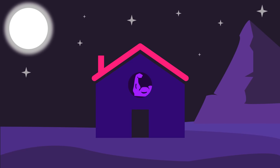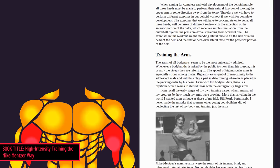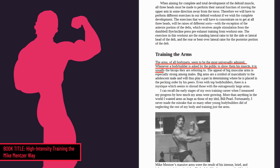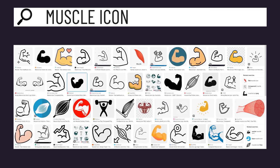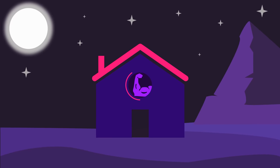Welcome to the House of Hypertrophy. As described by Mike Mensah, the arms of all body parts seem to be the most universally admired. Whenever a bodybuilder is asked by the public to show them his muscle, it is usually the biceps they are referring to. Even if you type 'muscle icon' into Google, virtually all images show the biceps. In fact, the House of Hypertrophy icon itself depicts the biceps.